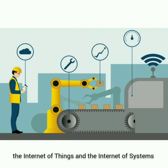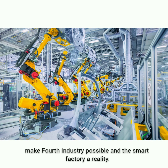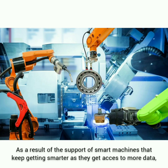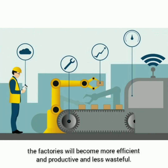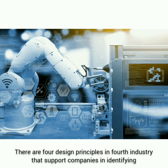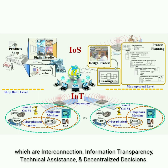A combination of cyber-physical systems, the Internet of Things, and the Internet of Systems make Industry 4.0 possible and the smart factory a reality. As a result of the support of smart machines that keep getting smarter as they get access to more data, factories will become more efficient, productive, and less wasteful. There are four design principles in the fourth industrial revolution that support companies: interconnection, information, transparency, technical assistance, and decentralized decisions.